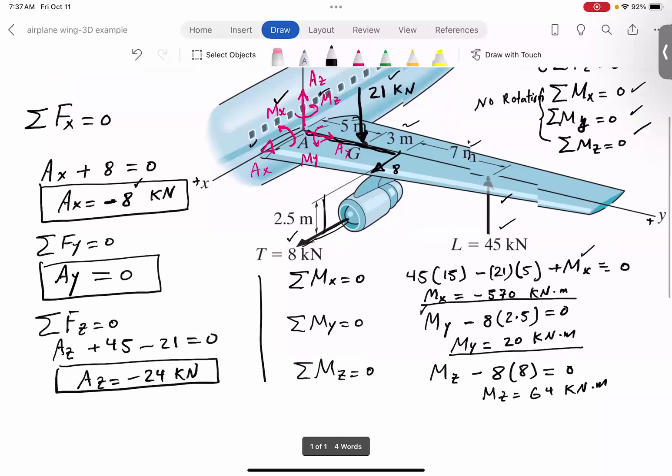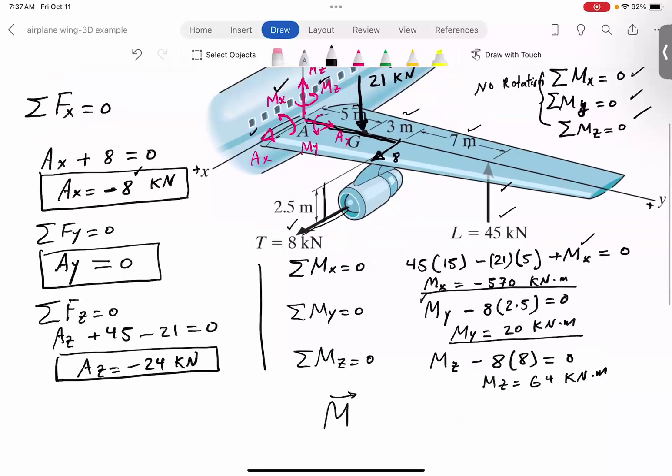Just like force that I showed you, the moment reaction at A, you can write it as minus 570 i, that would be the moment about X axis, 20 j for moment about Y axis. These are all kilonewton meters. That's the unit. And 64 k. That's in the Cartesian form. And you can find the magnitude of it if you want.